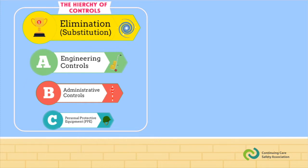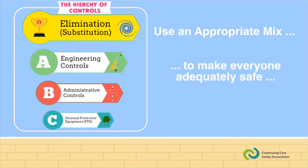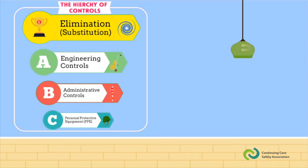So those are all the different styles of controls. But there is nothing that says that you can only use one of them per hazard. If you use an appropriate mix of engineering, administrative, and PPE, and get to a point where everyone is adequately safe, that's the goal. The key word is adequate.